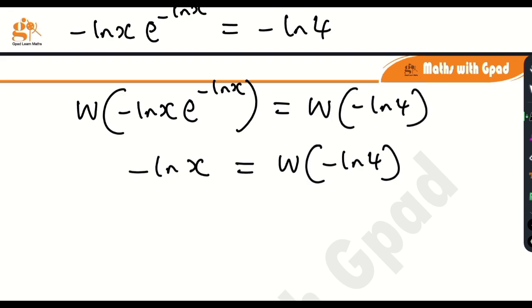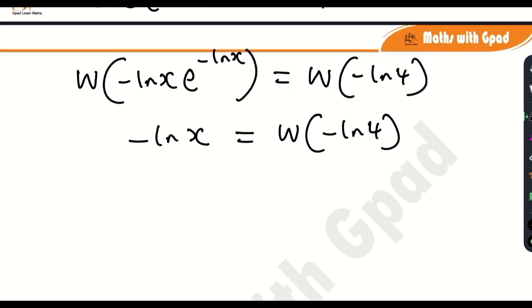I don't want this negative sign here. What am I going to do? I'm going to multiply both sides by minus. If you do that, you just have ln x on this side and then minus W into bracket minus ln 4. What should I do next? See, this is ln x, but I need to get the value of x.